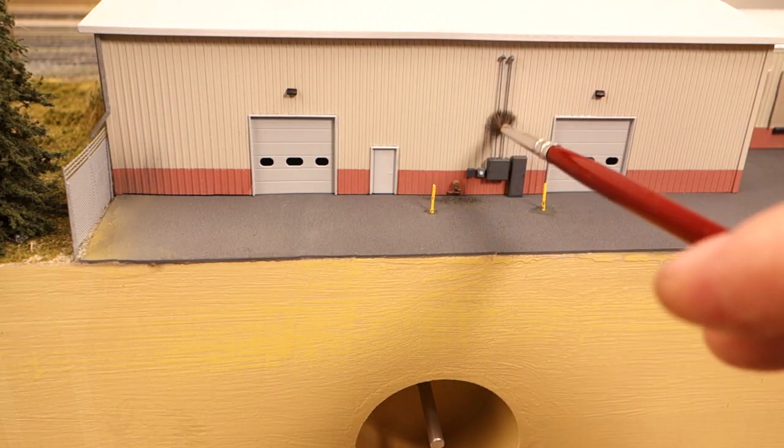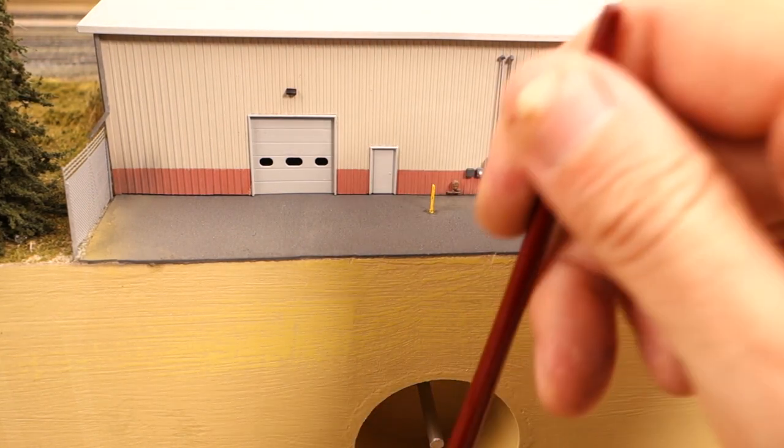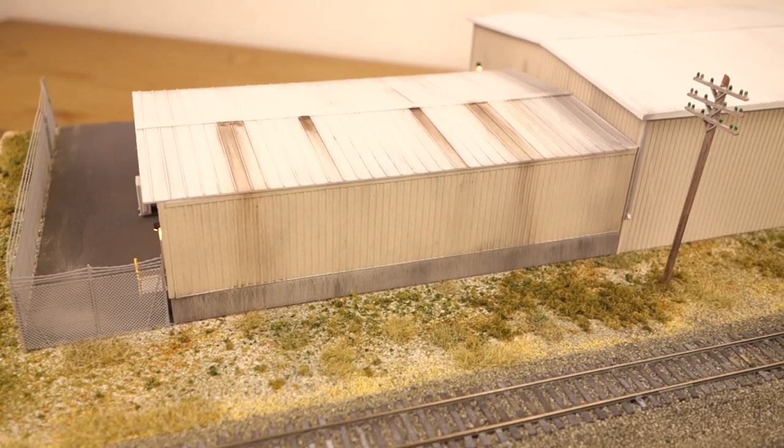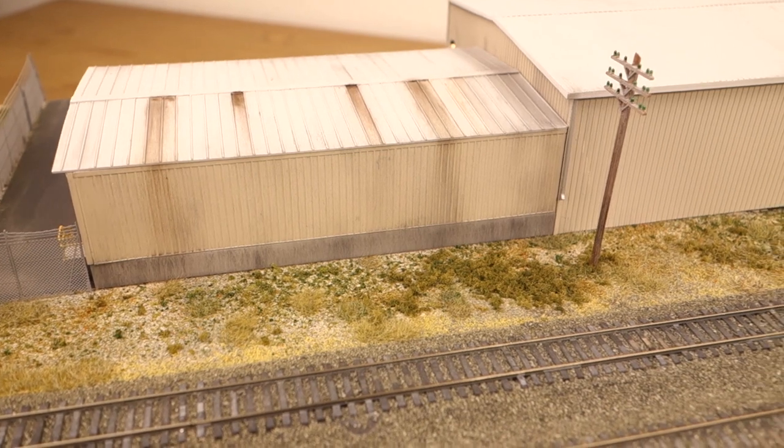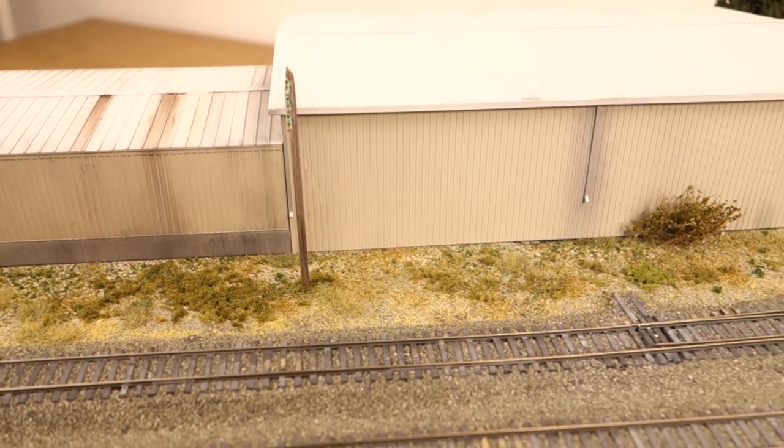I also used 740.1 burnt sienna extra dark and 740.3 burnt sienna shade on the loading dock roof. I mostly used a soft brush to apply the pastels. The streaky application on the loading dock concrete base was done with a brush with relatively stiff bristles.